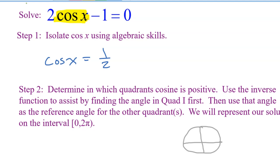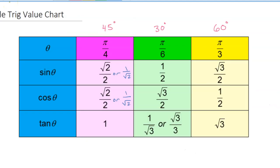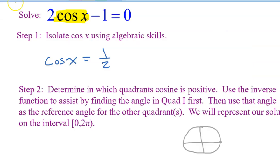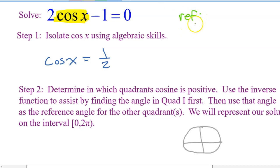The second step is to figure out what the reference angle is and figure out what quadrants we're dealing with. Using the chart that you've memorized — if you have not memorized it, pause the video, study it, and memorize it now. Using that chart, cosine of what angle equals one-half? That's pi over three. The cosine of pi over three is one-half. That's not the final answer — that's the reference angle.